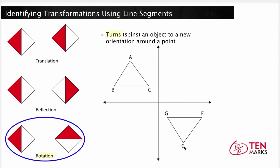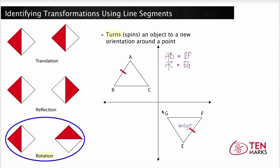Triangle EFG is the image of triangle ABC after it has been rotated. Triangle ABC has been rotated a complete 180 degrees to create this image, triangle EFG. The image and pre-image are still the same shape and size, so they are congruent. Since this is a rotation, each pair of corresponding sides are congruent, but you have to be careful because the corresponding sides are not necessarily on the same right, left, top, and bottom side. Side AB is congruent to side EF, side AC is congruent to side EG, and side BC is congruent to side FG.